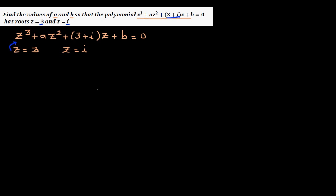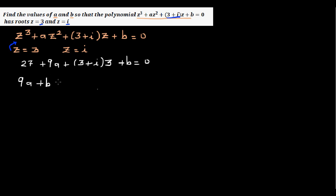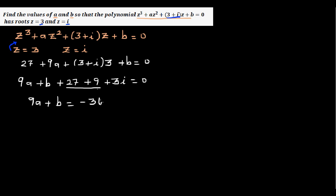Substituting z = 3: we get 3 cubed plus a times 3 squared plus (3 + i) times 3 plus b = 0, which gives 27 + 9a + 9 + 3i + b = 0. So the first equation is: 9a + b = -36 - 3i.